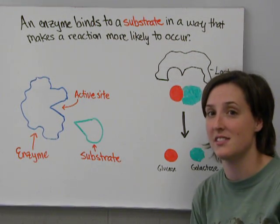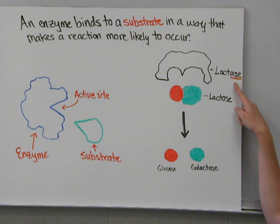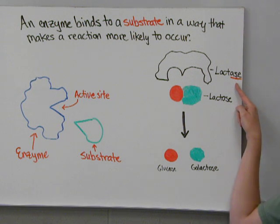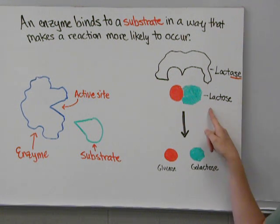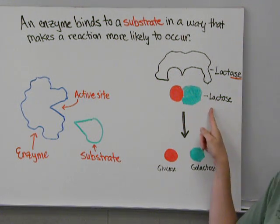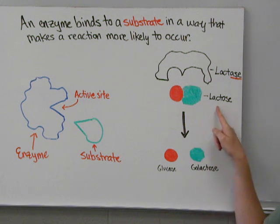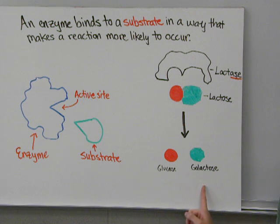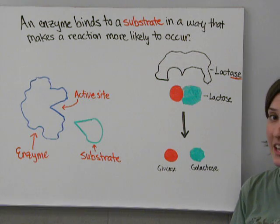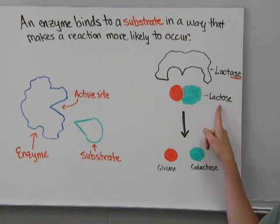For example, here is an enzyme: lactase. Notice that it has '-ase' as the ending — a lot of enzymes end in '-ase,' though not all of them. Lactase can break down lactose, which is a milk sugar. Lactose breaks down to glucose and galactose. If you're someone who's lactose intolerant, your body doesn't make enough lactase to break down the lactose.